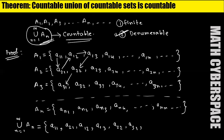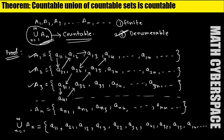Here the sum of the indices is 4. Now I will find the elements where the sum of the indices is 5. The next elements will be a41, a32, a23, and a14. In this way, we can cover all the elements which exist in these sets. No elements will be left. So this is the proper arrangement of the union set.